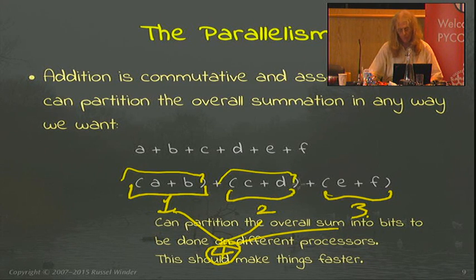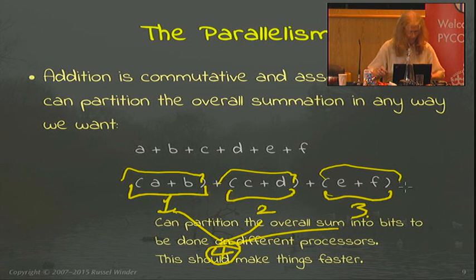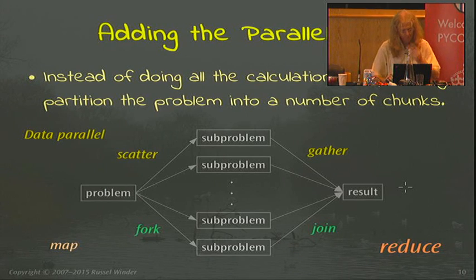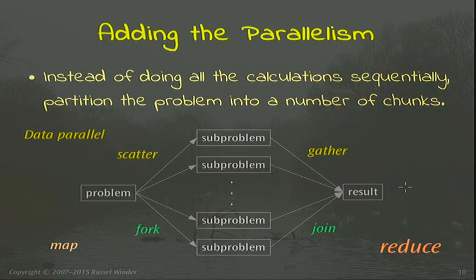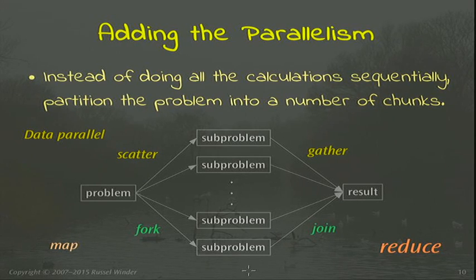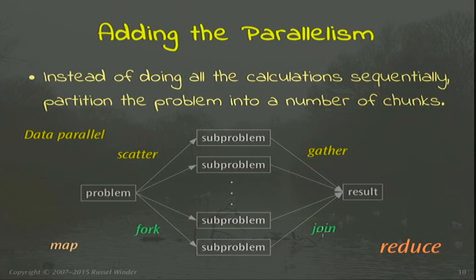We get the partial sums on each processor. People call it scatter-gather, fork-join, map-reduce — they're actually very different things. Scatter-gather is a different form of parallelism to fork-join, which is a different form to map-reduce. Anybody in parallelism knows that reduce is actually the most important operation there is, which is why Python reduced it from a member of the language to something in a library. Unlike map and filter. Big error.